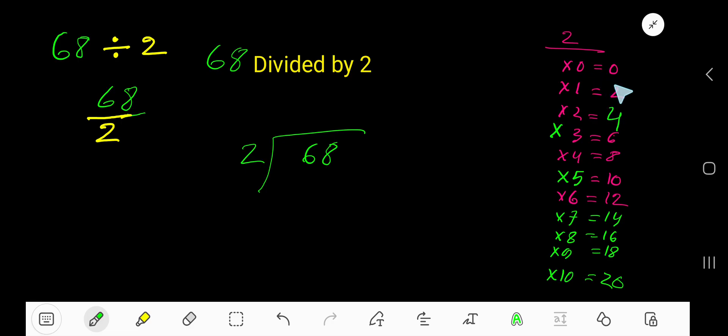To find the multiplication table of 2, you just need to add 2 with the previous step. 0 plus 2 is 2, 2 plus 2 is 4, 4 plus 2 is 6, 6 plus 2 is 8. This will continue. So 2 goes into 6 how many times?